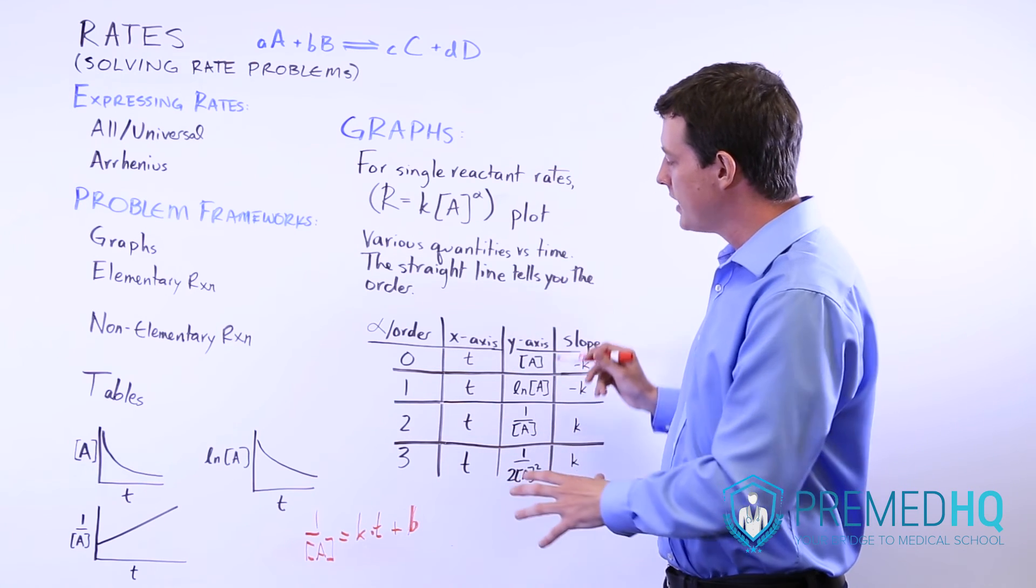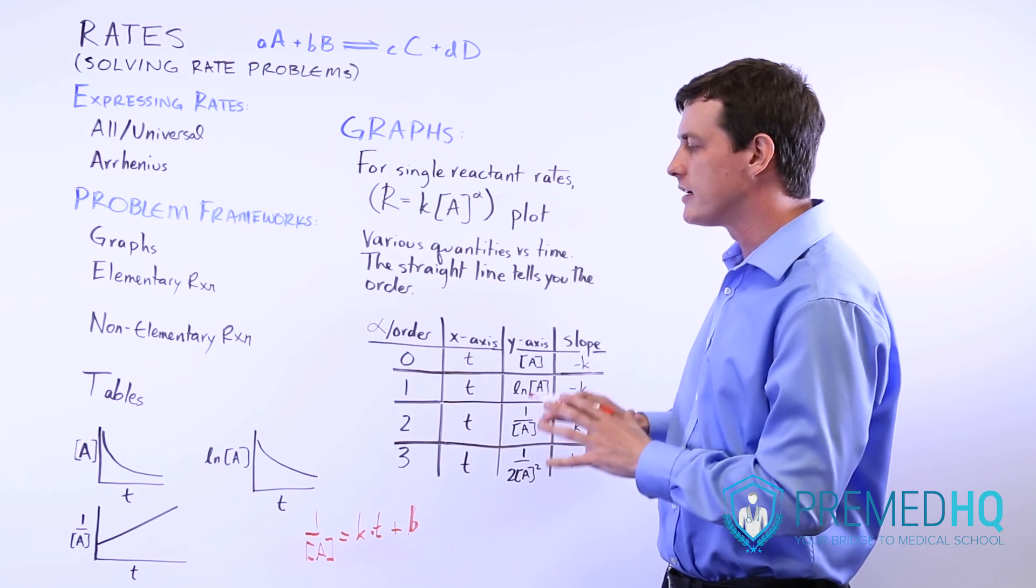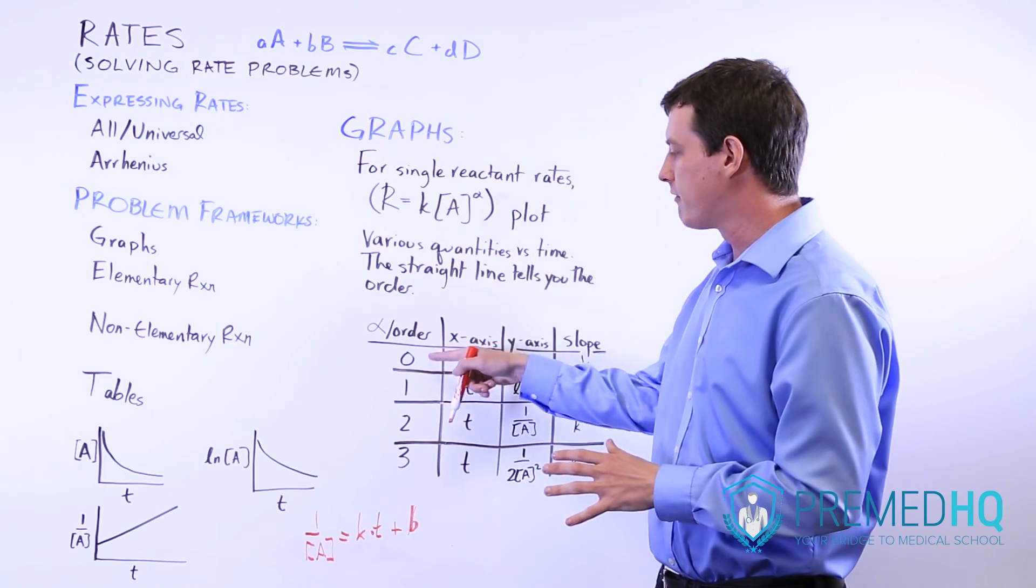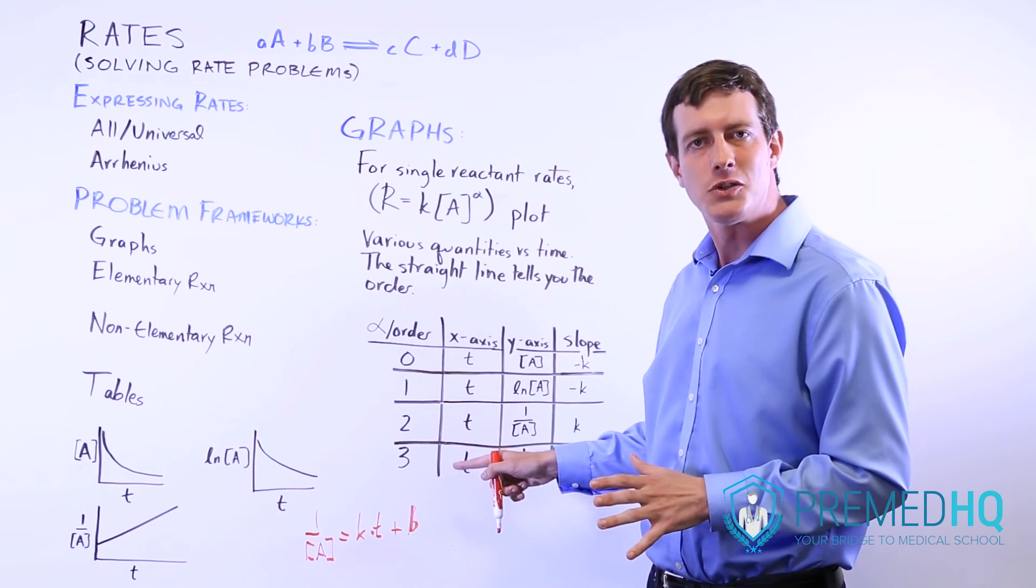So memorize this table and be able to recognize which of these graphs will yield a straight line for which order. And whichever one yields a straight line, that tells you the order.